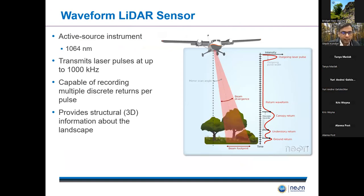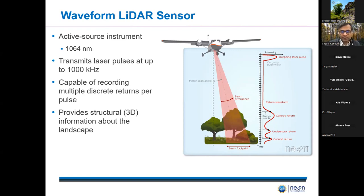We'll be using LiDAR data in this tutorial. LiDAR stands for Light Detection and Ranging, and it's an active instrument, meaning it shoots pulses of light at a high frequency of up to 1,000 kHz, which translates to 1 million pulses per second. The sensor then records the reflected energy. By keeping track of the time between sending the pulse and receiving it back, one can calculate how far an object is from the sensor.